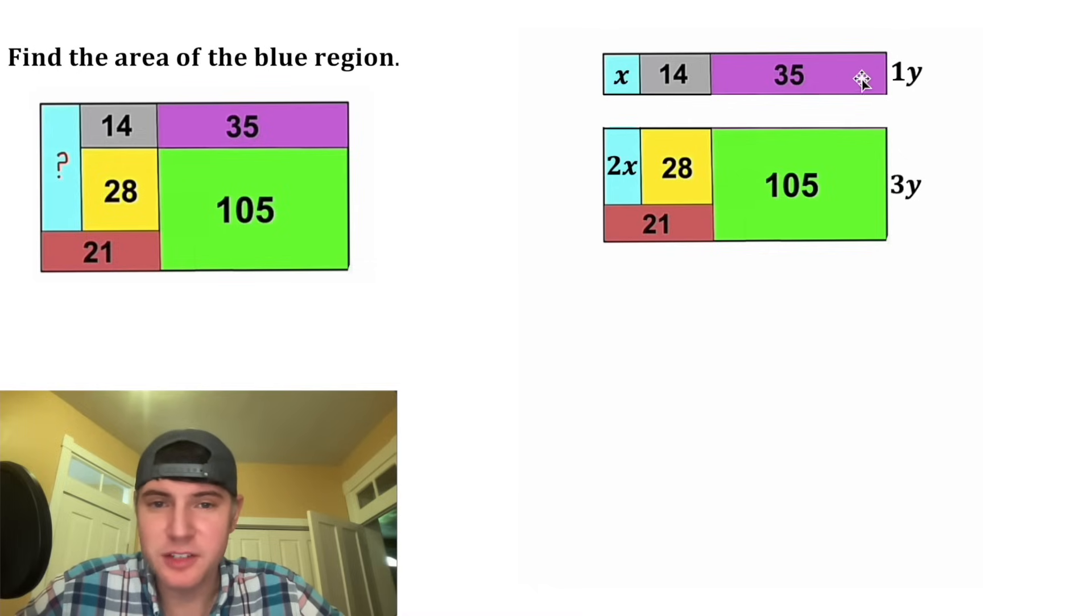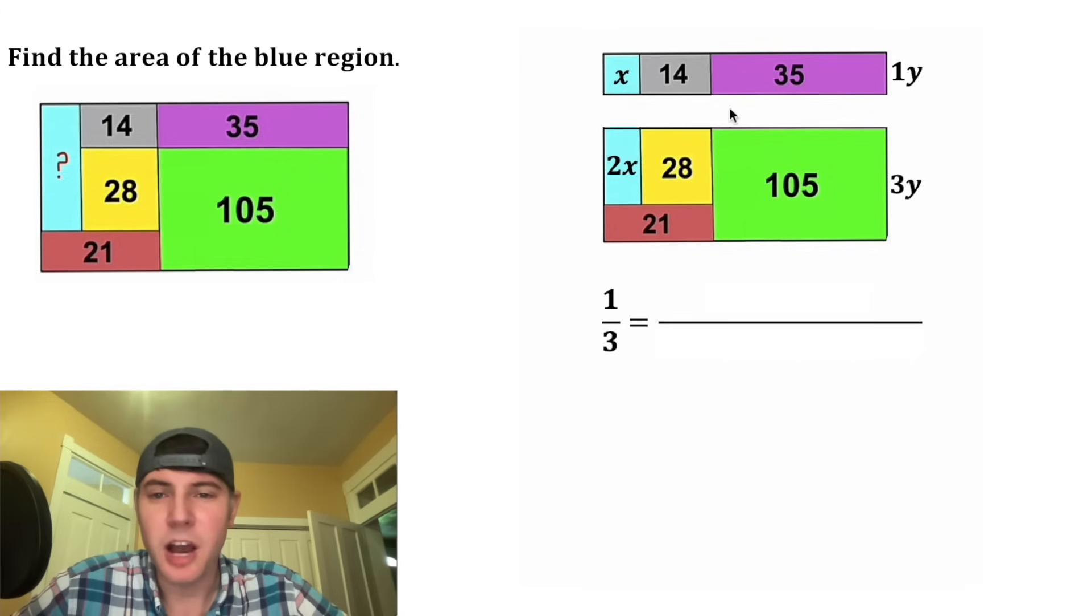We know that all of this stuff is going to be one-third of all of this stuff, so we can set up a proportion. On top, it would be this whole area, which would be x plus 14 plus 35. And on bottom, it would be this whole area, which would be 2x plus 28 plus 21 plus 105.